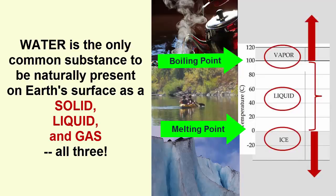So if the boiling point of water is 212 degrees Fahrenheit, how is gaseous water naturally present on Earth's surface when the temperature never reaches that high?